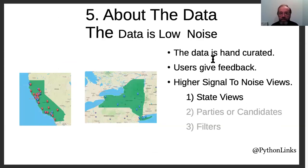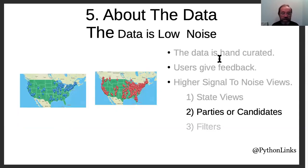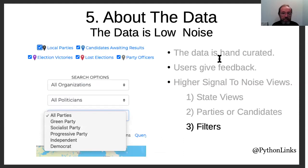Now let's talk about the data. The data is low noise — it's hand curated, which gets rid of a lot of errors, and users give feedback and really care. On the state and national maps you can either show candidates or parties, and we have a lot more filter options now. So you can get a view of the map that just shows the data somebody needs — very good signal-to-noise ratio. There's a long list of filter options so you can filter down exactly to what people want to see.